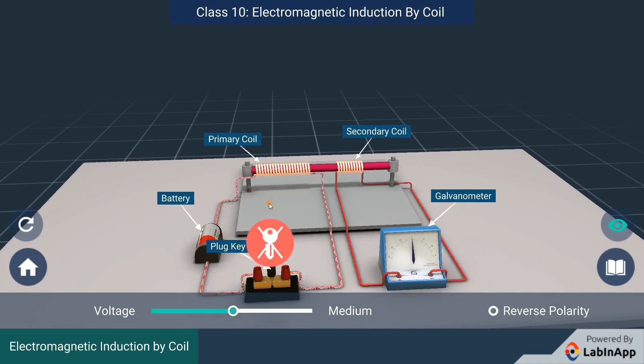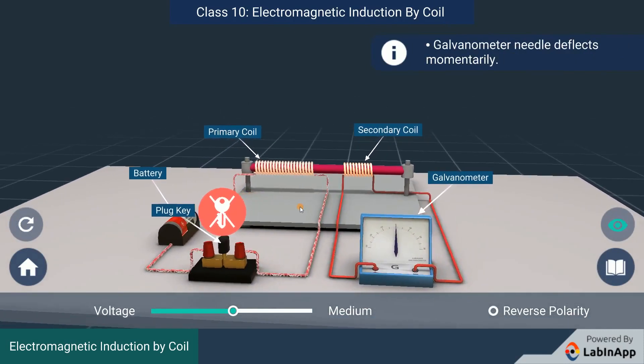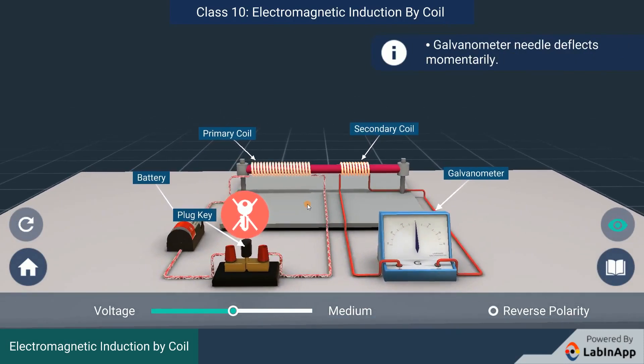There is a momentary current in the secondary coil. We can see that the galvanometer deflects momentarily. The galvanometer needle jumps to one side and quickly returns to zero.